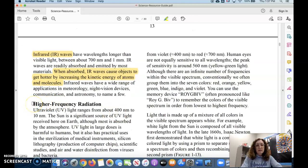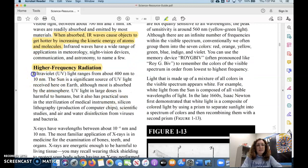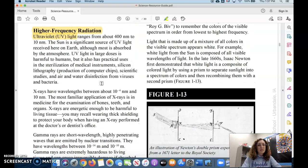On the right-hand side of that spectrum, we've got higher frequency radiation. So, ultraviolet light, UV light. This is the kind of light that comes from the sun, but a lot of it is absorbed. We don't actually see UV light.